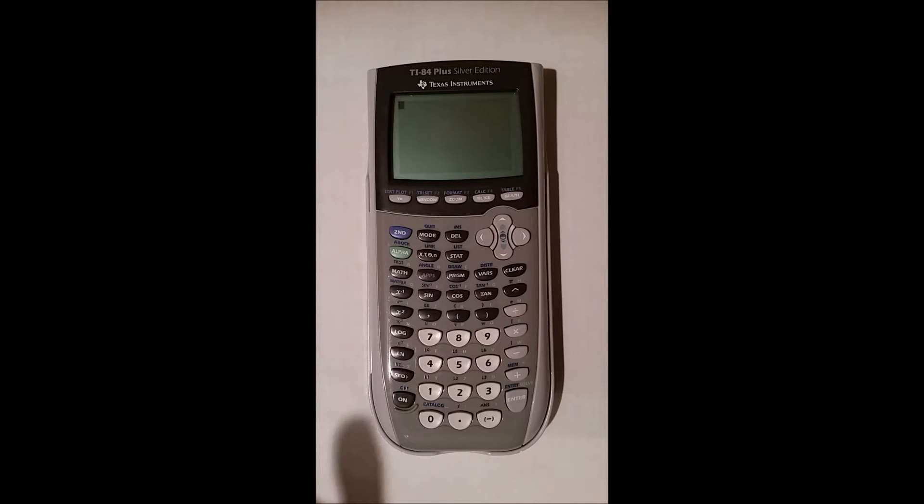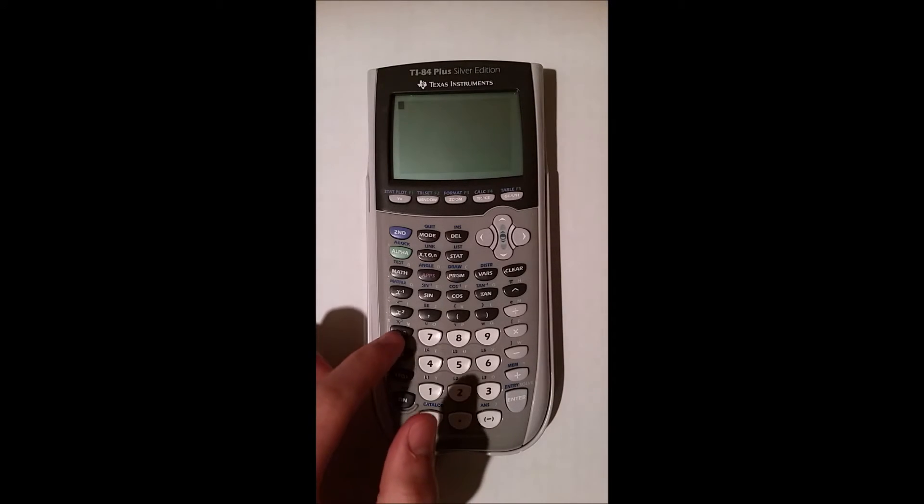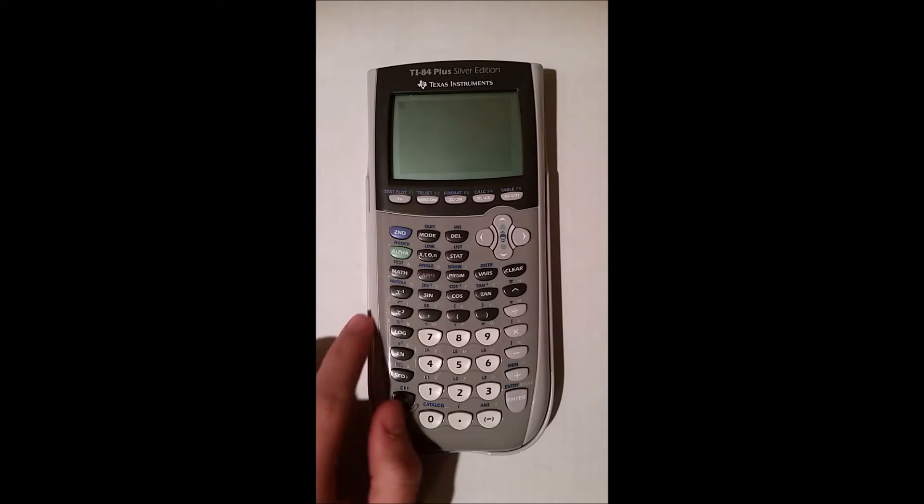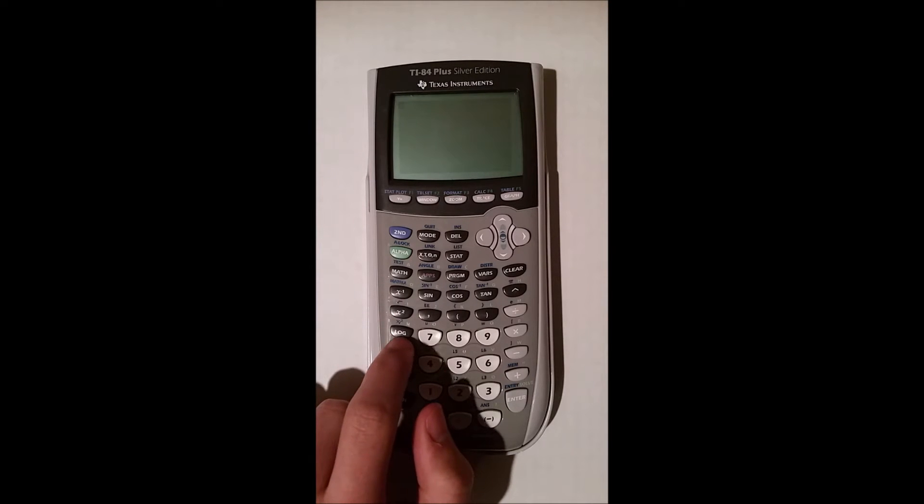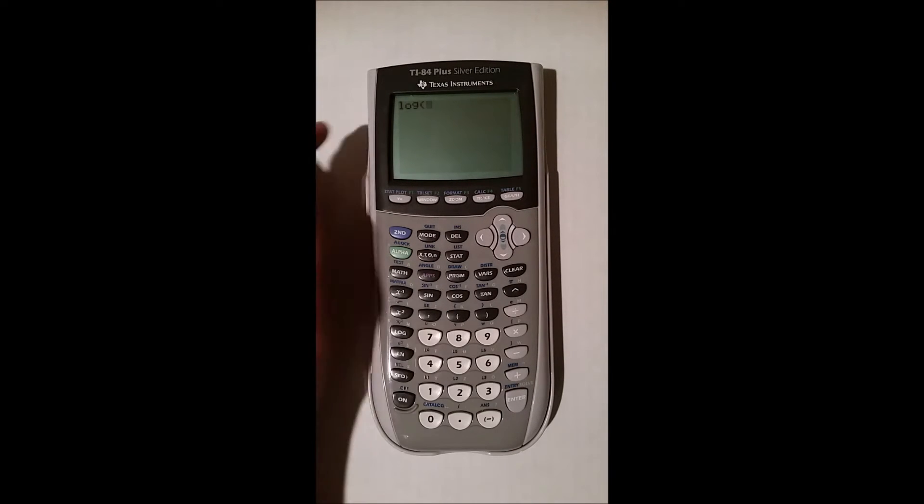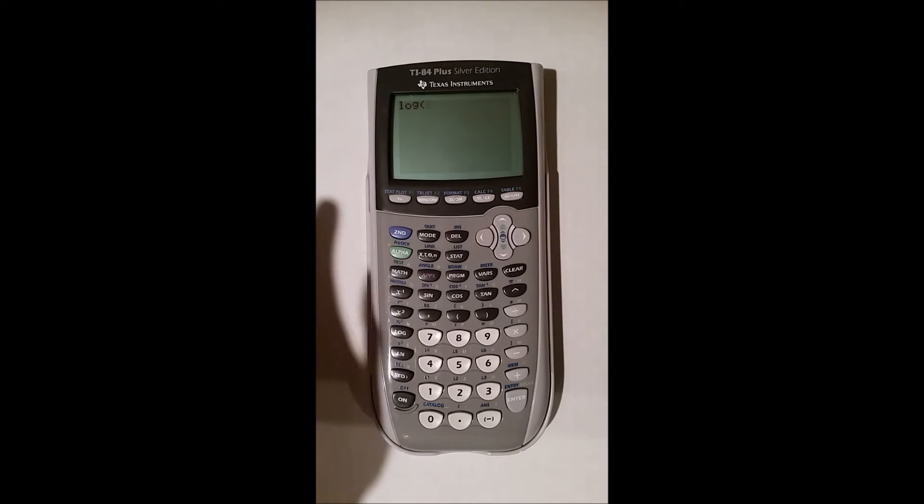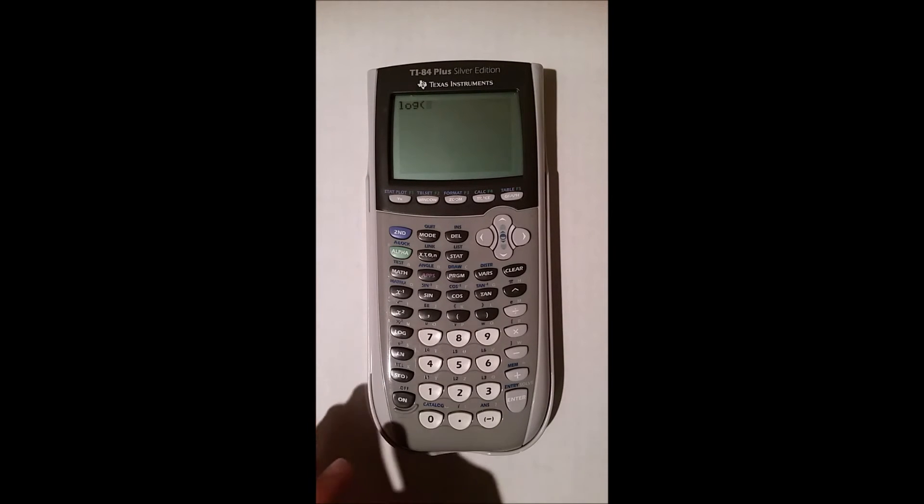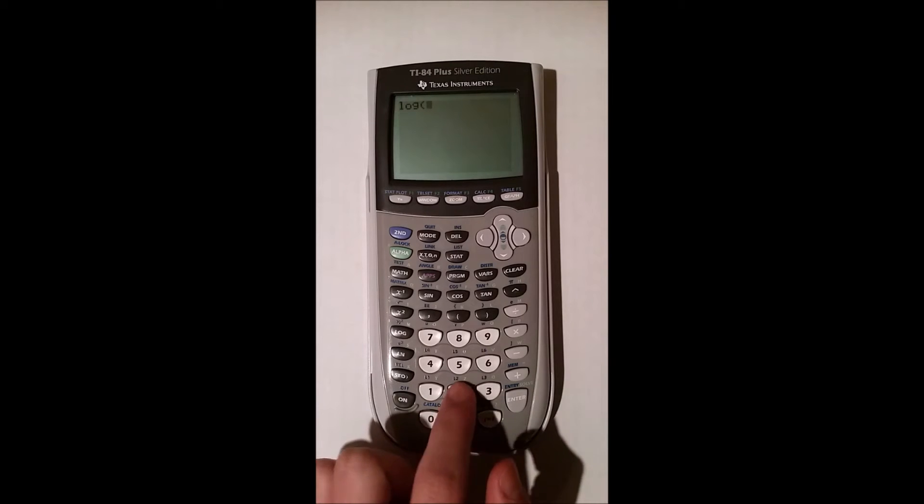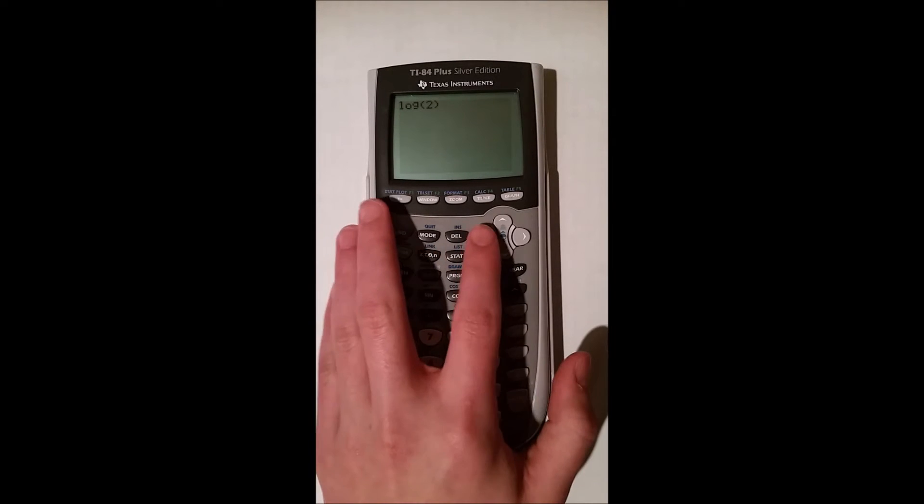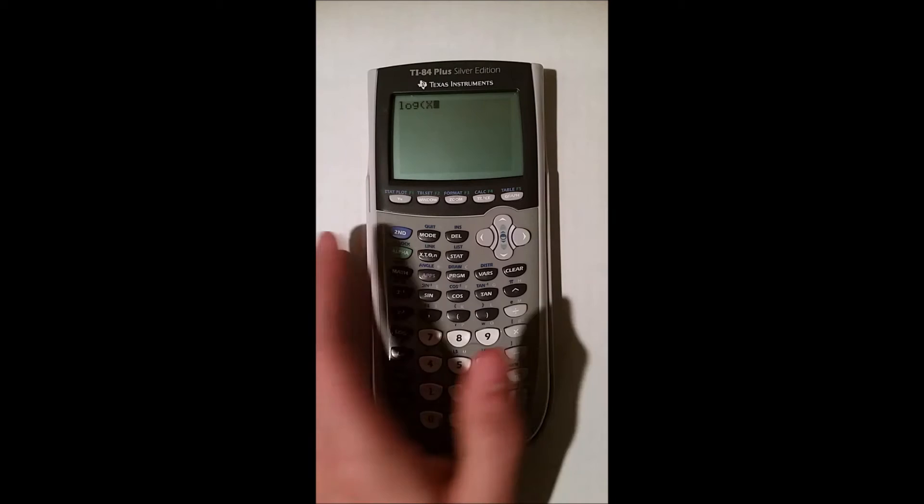So the most basic logarithm or log is a log with a base of 10. A base is just part of a log that is just a number. So the most basic is log with a base of 10, which if you look right here, this button that says log is exactly that. It doesn't say there's a base of 10, but that is what it is. And you can put in your number that you're trying to find or a variable.